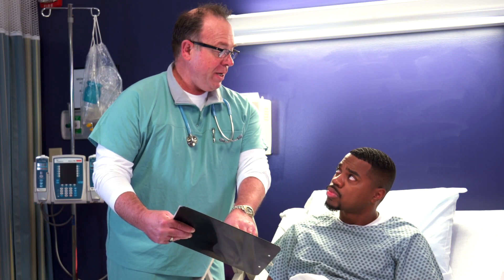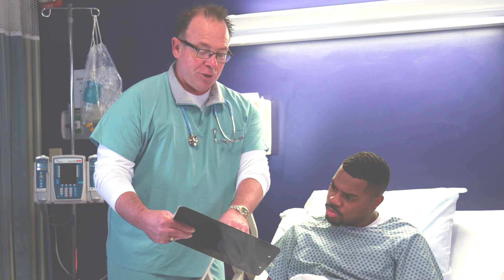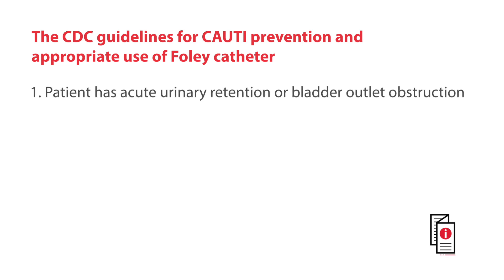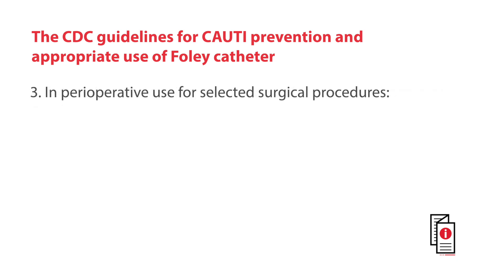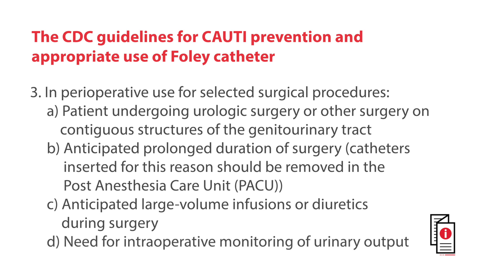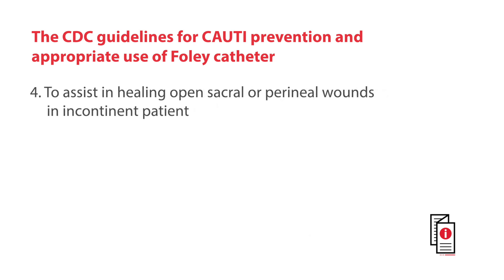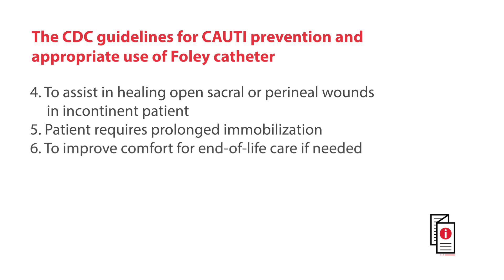First, review the patient's chart to ensure there is an order for catheterization based on the indications covered in our first video. These include acute urinary retention or bladder outlet obstruction, need for accurate output data for critically ill patients, perioperatively in select procedures including urologic surgeries, prolonged surgeries, when large volume infusions or intraoperative administration of diuretics are anticipated, or when monitoring of intraoperative urine output is necessary. Other indications include incontinent patients with open sacral or perineal wounds, patients subject to prolonged immobilization, and as a comfort measure when needed in end-of-life care.